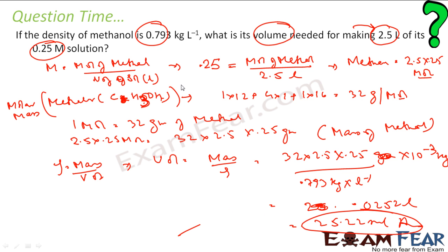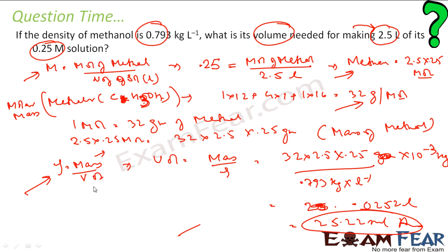The only thing we did: we had the molarity, we found the moles of methanol. From the moles of methanol we found the grams of methanol — that is the mass. The density of methanol was given and mass was found, so we could find the volume of methanol.